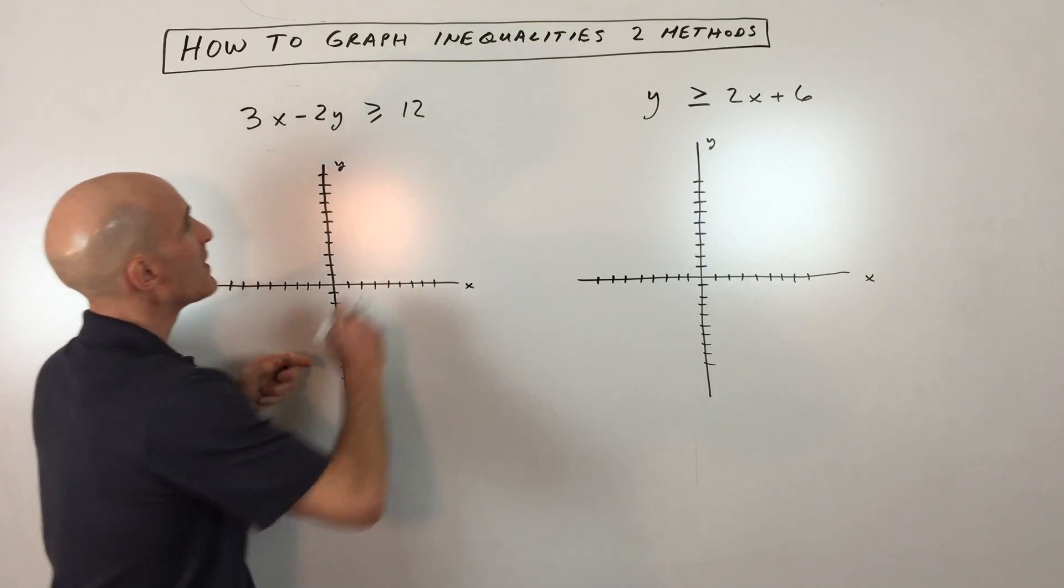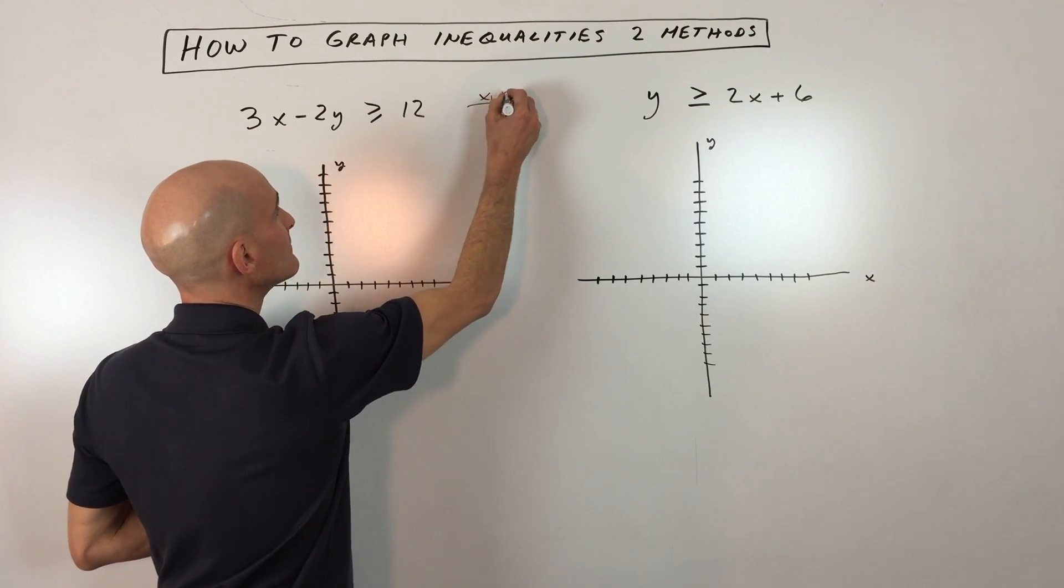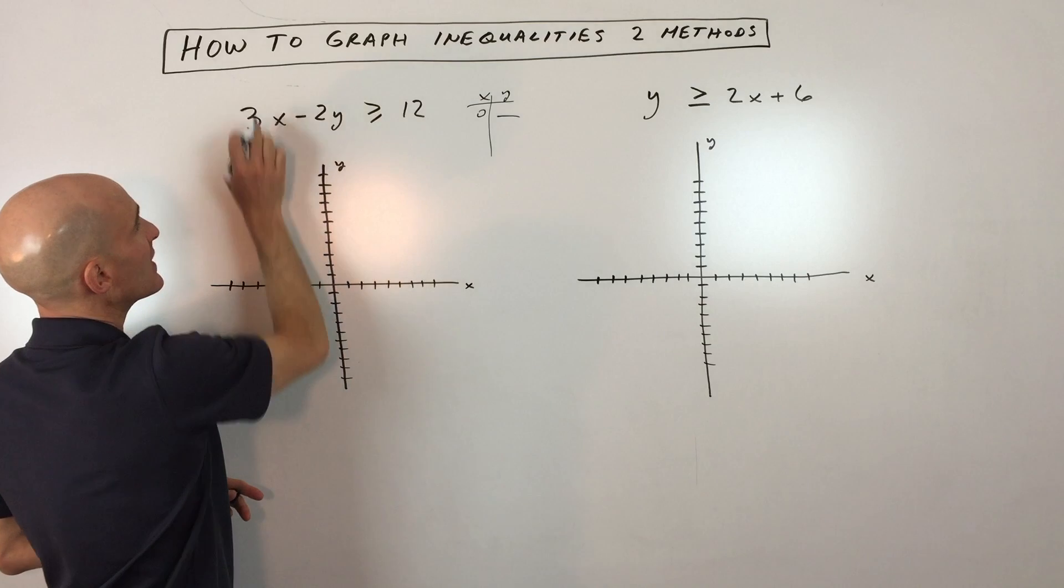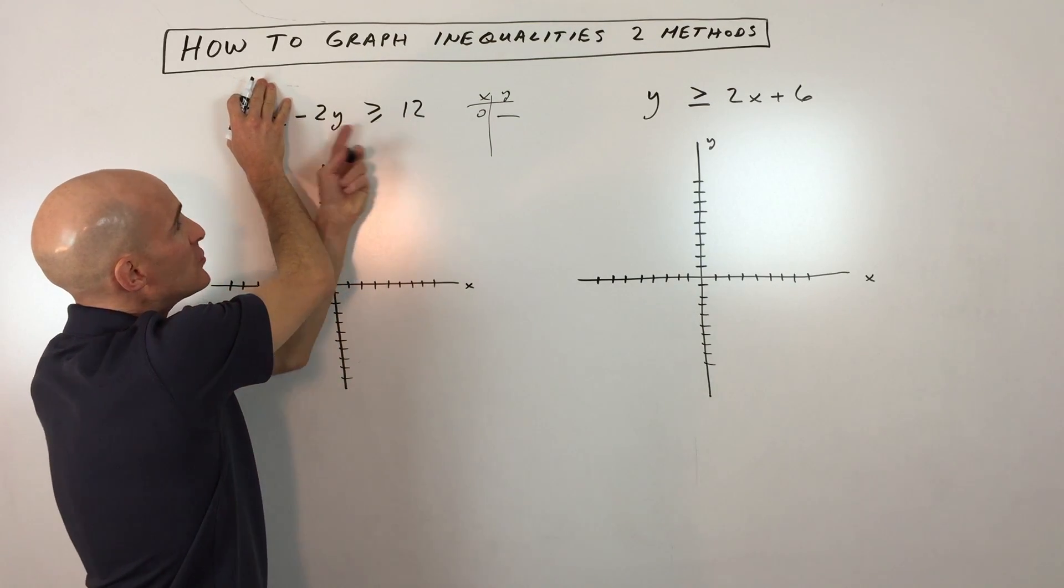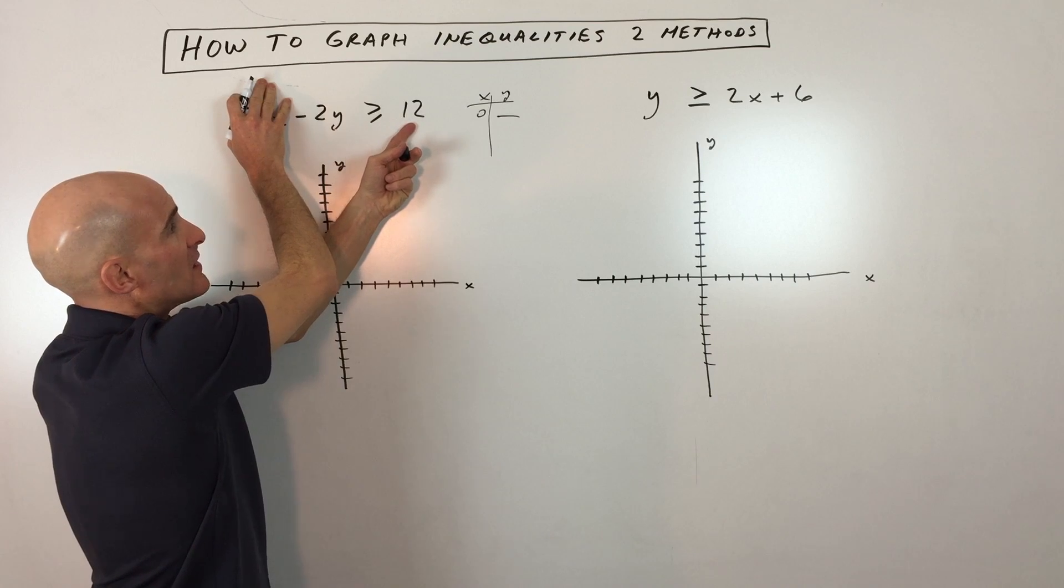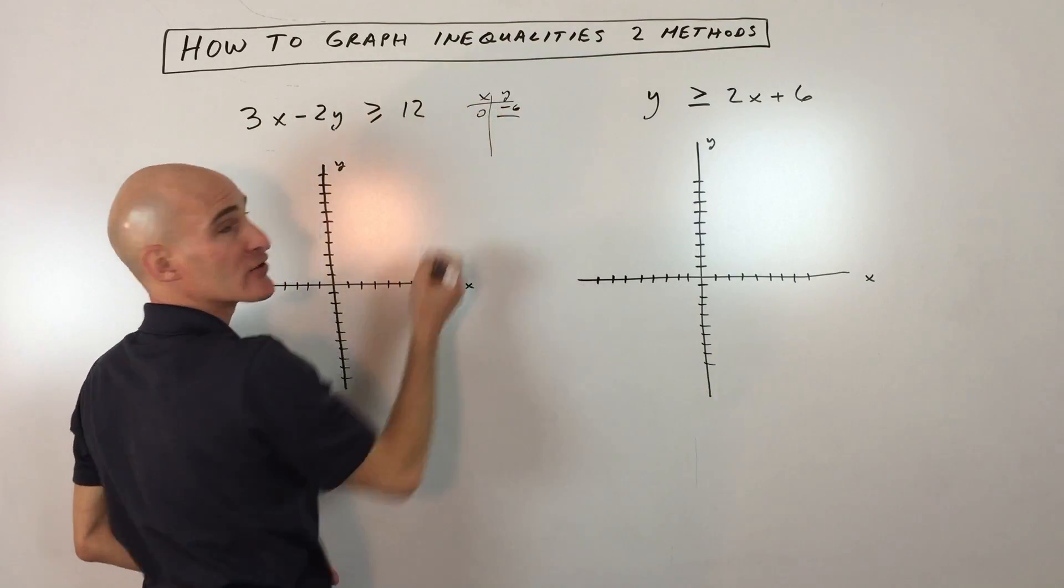So the first technique, what you would do is you'd make a little table like this. You'd say, if x is 0, okay, 0 times anything is 0, so I'm covering that up. If I divide by negative 2, you can see that y would be negative 6. So that's the y-intercept.